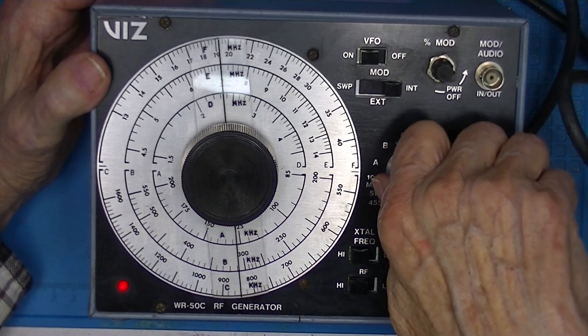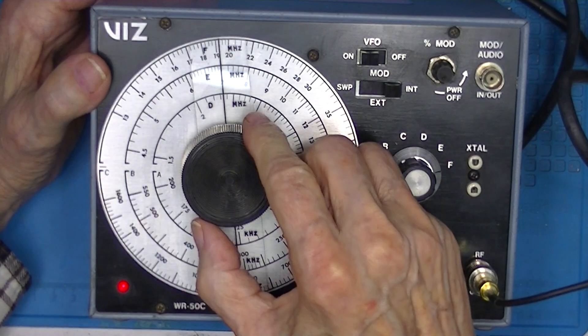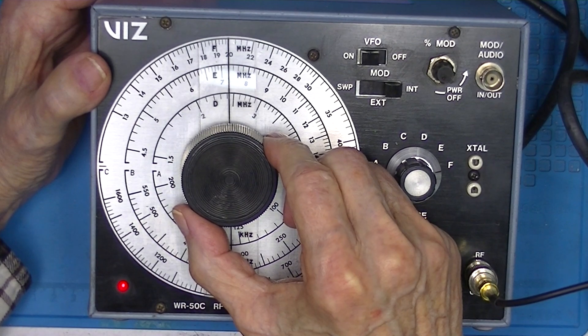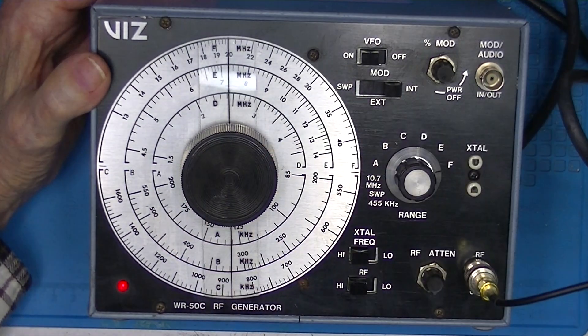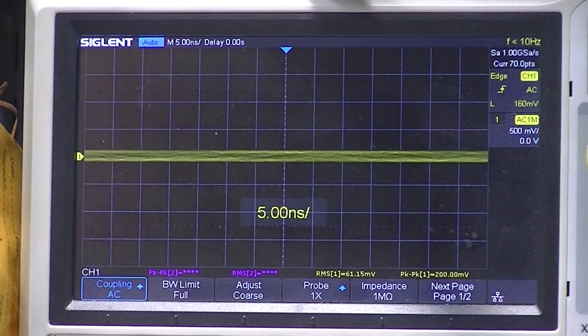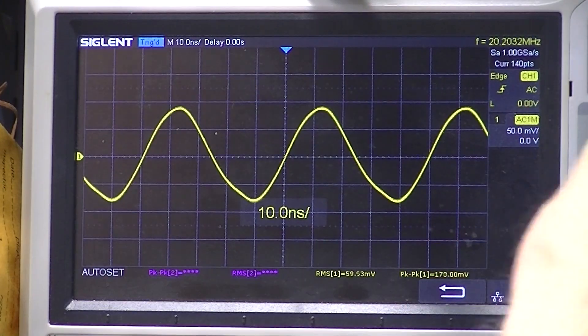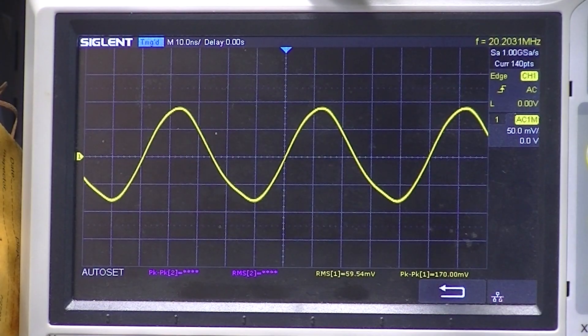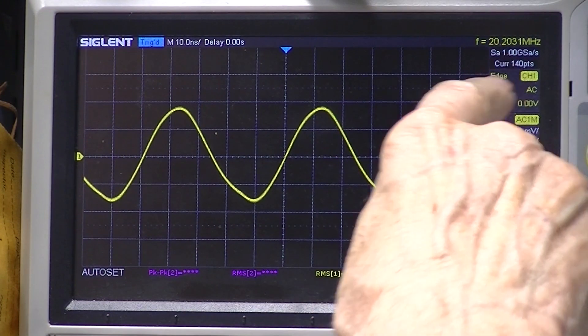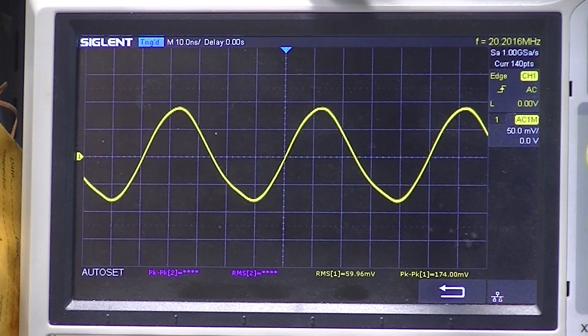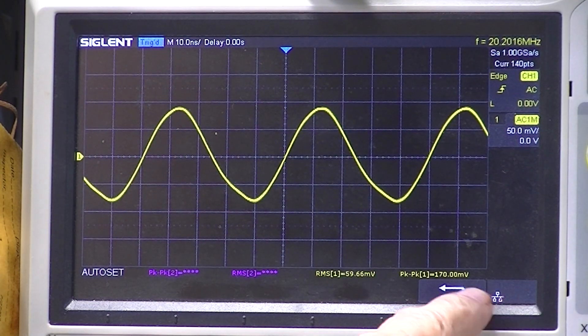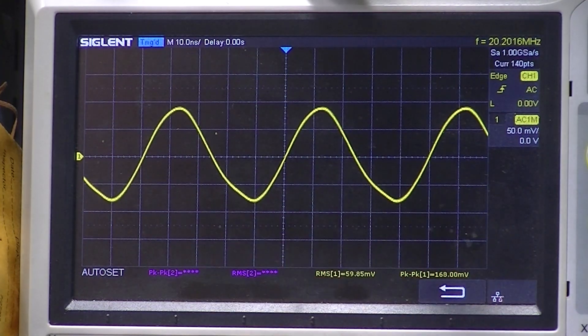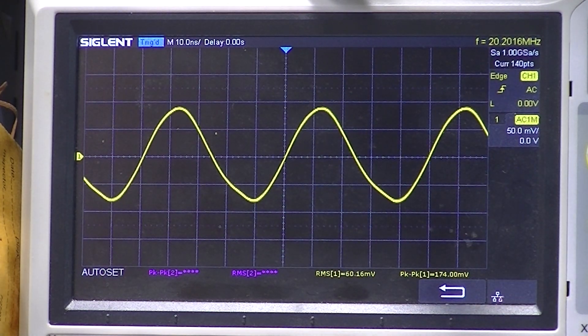To band F. And 20 megahertz. And now I'm going to have to change scales on the scope. So it's 20.2 megahertz, but the output has dropped to 170 millivolts.